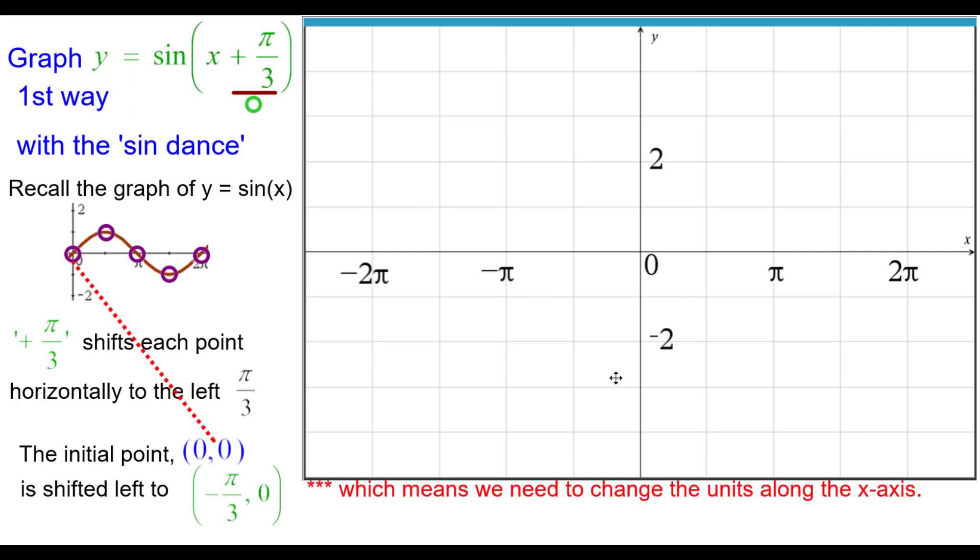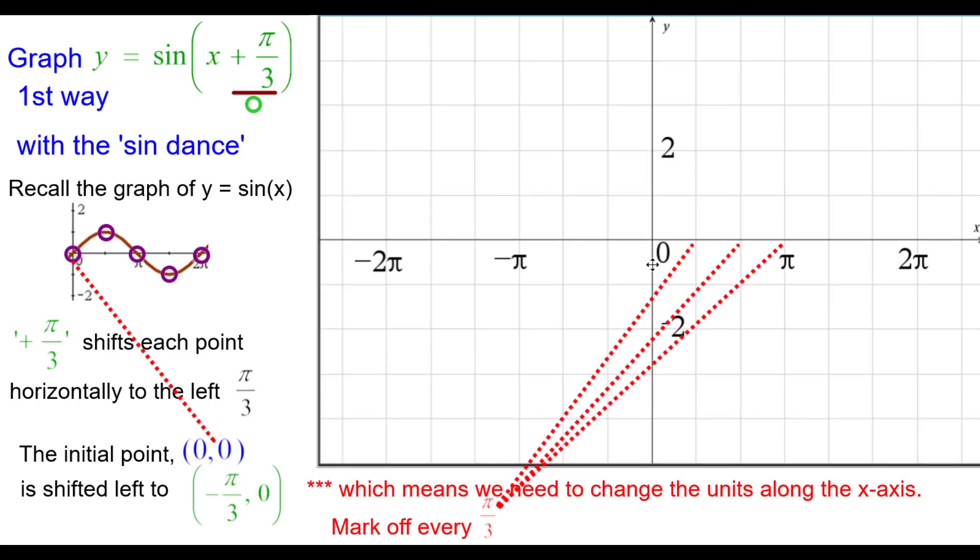Before we do that we do need to change the units along the x axis so that this plots better so we need to mark off every pi over 3 instead of every pi over 2. So we did that here, 1 third pi, 2 thirds pi, 3 thirds pi which is pi. Pause as needed to get caught up.